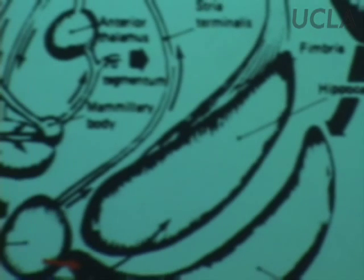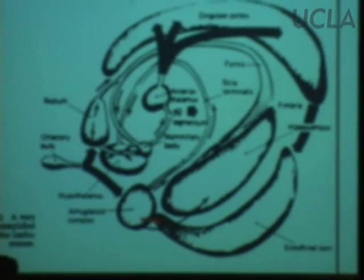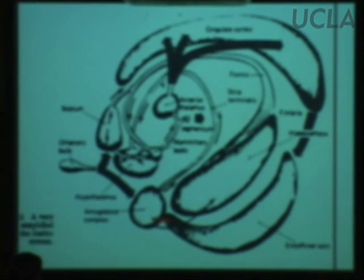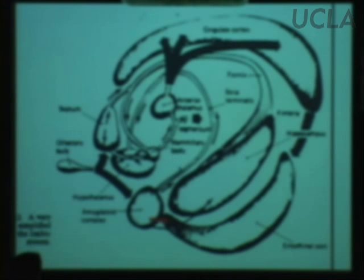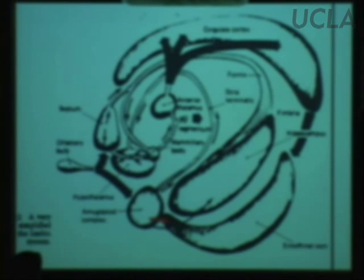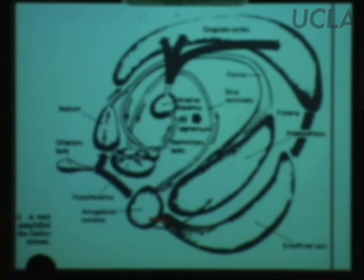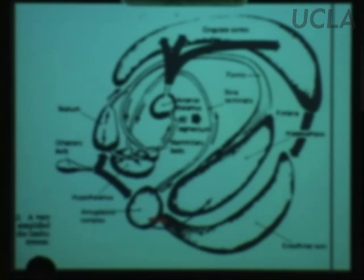The amygdala has a couple of big-deal outputs. One is via a big axonal tract called the stria terminalis, which connects the amygdala to the hypothalamus. Recall you can get emotional responses like fear and rage out of the amygdala — and you can also get those responses from stimulating the hypothalamus. The hypothalamus is technically not part of the limbic system, but it has a lot of connections — inputs and outputs — with the limbic system.